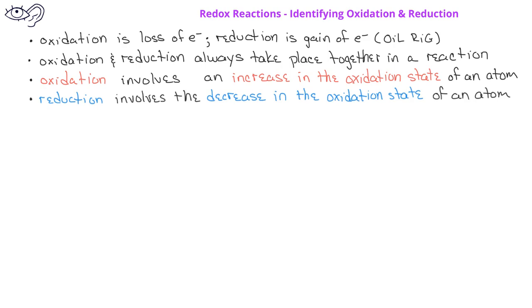For example, if we have calcium metal going to calcium 2+ ion and 2 electrons, we see that the calcium experienced an increase in oxidation state, which means that the calcium underwent oxidation.